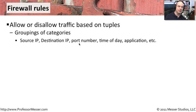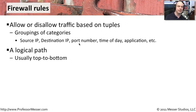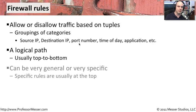We group those tuples together and say: if you match all of these, then you are either allowed or denied access to certain resources. Usually there is also a logical path that you follow with firewall rules. Almost always, you start at the top of a rule base and work your way down — though not every firewall works that way. You'll need to look at your particular firewall to find out exactly the path it follows to determine whether somebody has access or not.